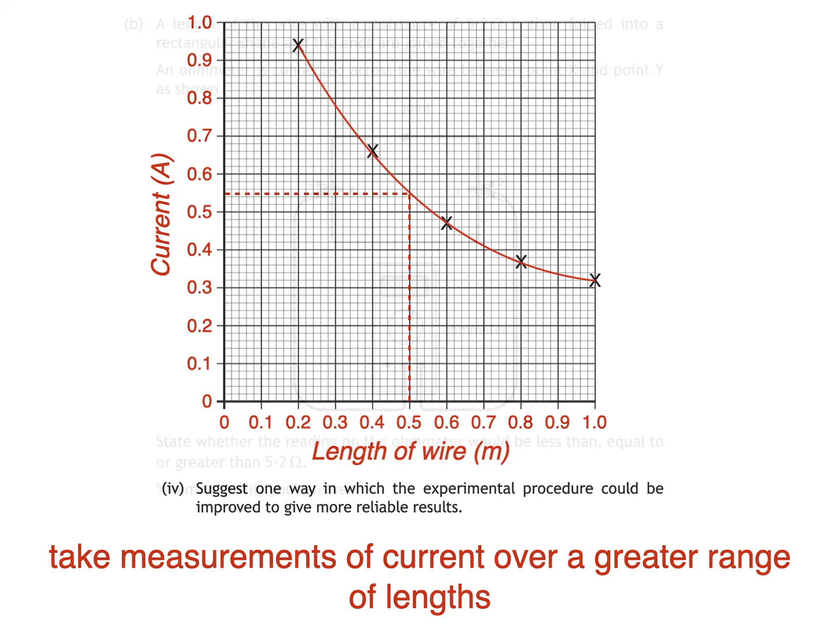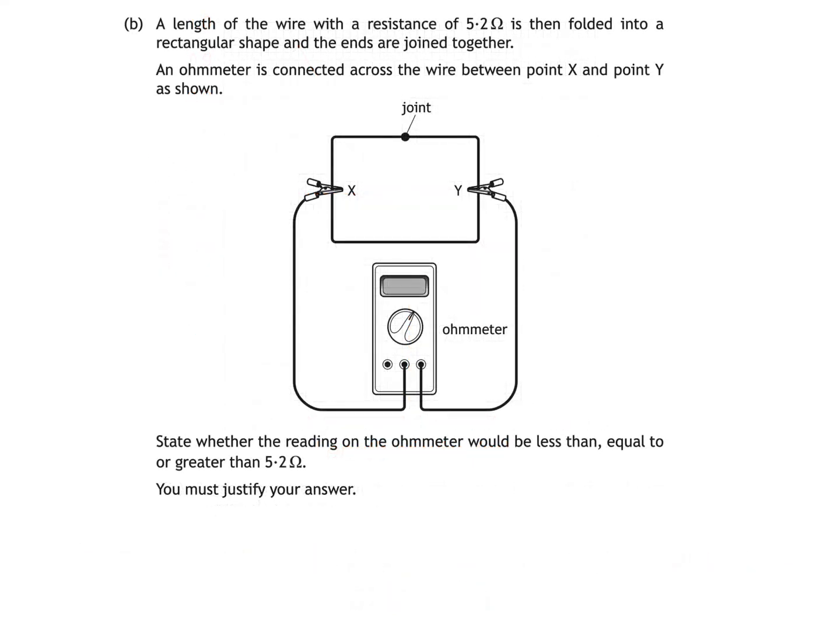Finally this is part B of the question, which takes us away from graphs and onto resistors in parallel. A length of the wire with a resistance of 5.2 ohms is then folded into a rectangular shape and the ends are joined together. An ohmmeter is connected across the wire between points X and point Y as shown.